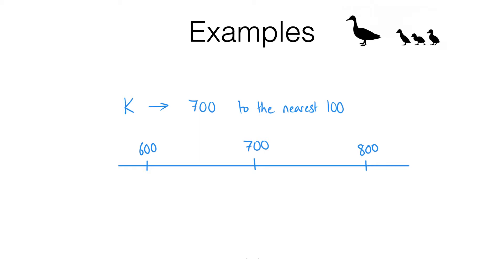The big idea is that k rounded to 700 means it had to be closer to 700 than 600, and it also has to be closer to 700 than 800, which means it has to be somewhere in between 650 and 750. If it was less than 650 it would have rounded down to 600, and if it was above 750 it would have rounded up to 800, but if it was anywhere in this range it would round to 700.